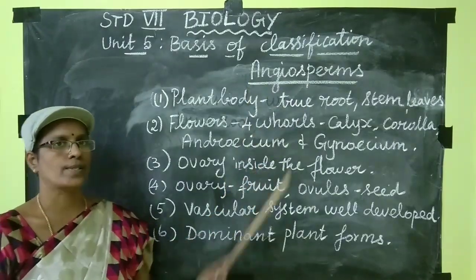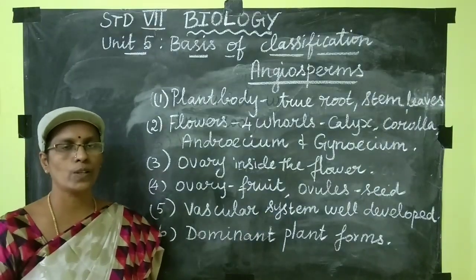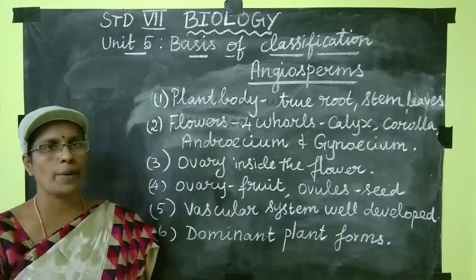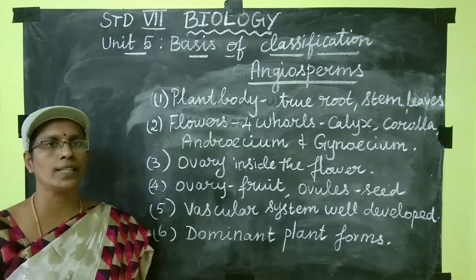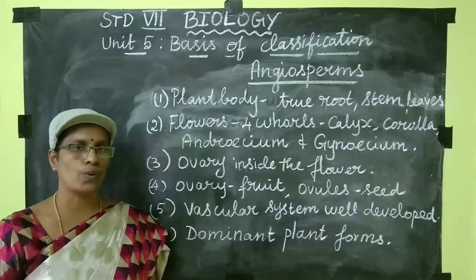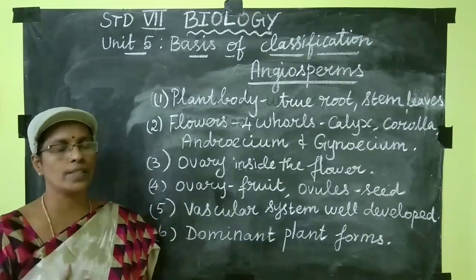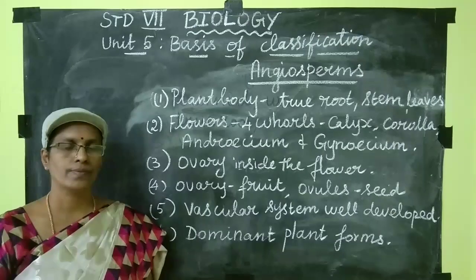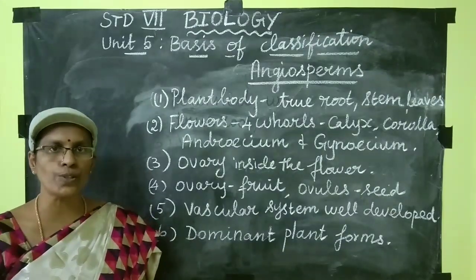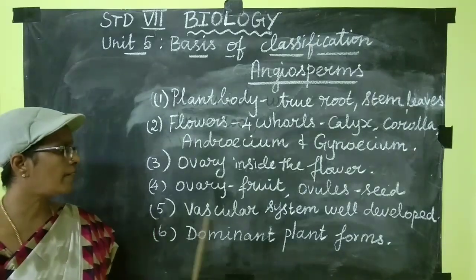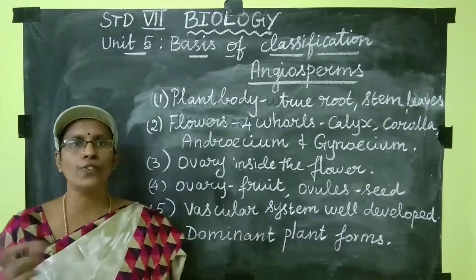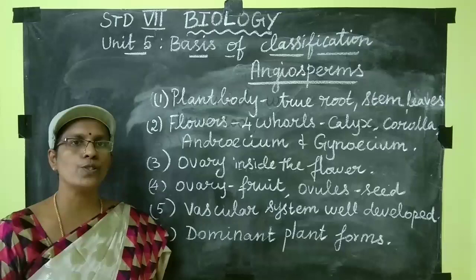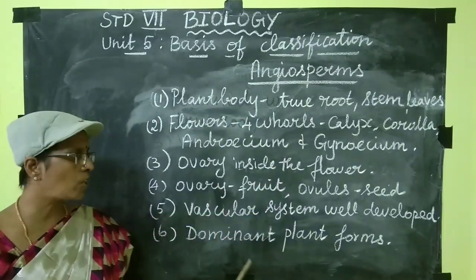Now let's see angiosperms. Angiosperms are flowering plants where seeds are enclosed within the fruit. The plant body is well differentiated into true root, stem, and leaves. They produce flowers with four whorls: calyx, corolla, androecium, and gynoecium. The female reproductive part — the ovary — is present inside the flower. After fertilization, the ovary develops into fruit and the ovules develop into seeds. The vascular system — xylem and phloem — is well developed; xylem vessels and phloem companion cells are present. These are the dominant plant forms nowadays.